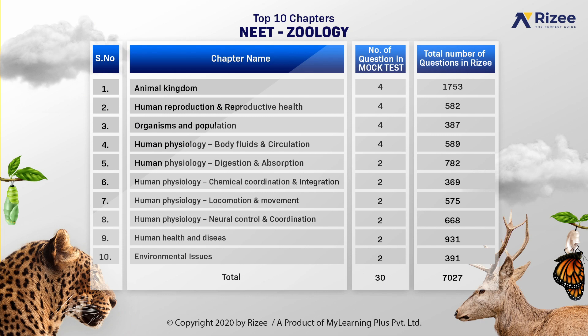The number of questions given in our mock test from these 10 important Zoology chapters are 30 out of 45. The chapters are: Animal Kingdom — 4 questions; Human Reproduction and Reproductive Health — 4 questions; Organisms and Populations — 4 questions; Human Physiology: Body Fluids and Circulation — 4 questions; Human Physiology: Digestion and Absorption — 2 questions.